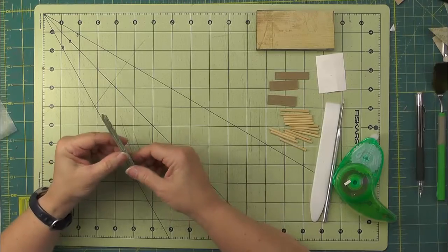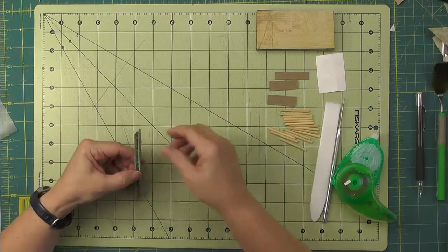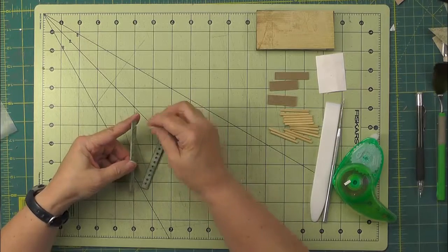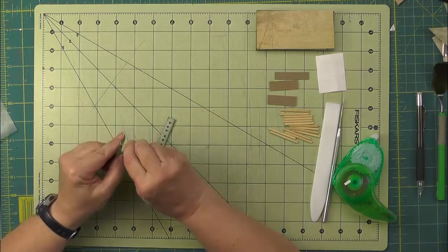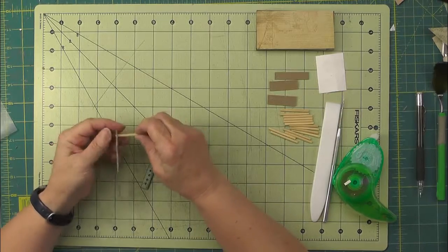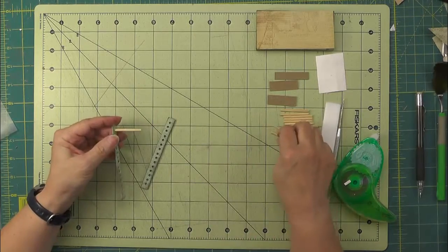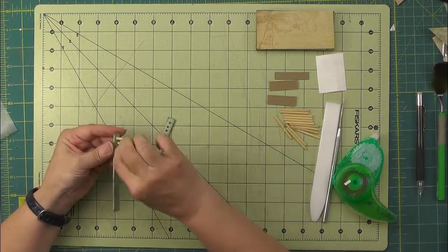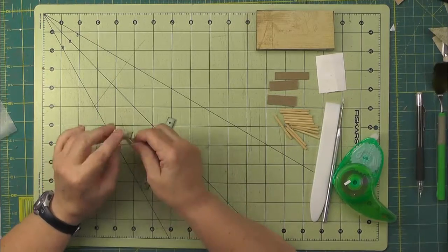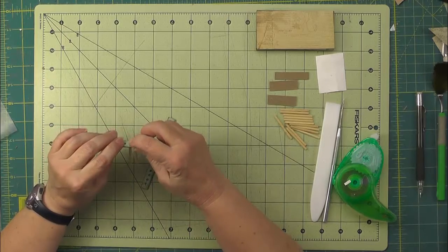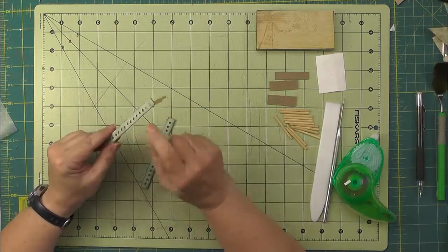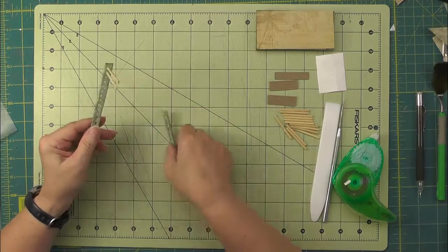And then what we want to do next is we have all of our little eighth inch dowels that have been cut to an inch and a half. And we're going to glue them in to make the ladder. So just glue them in. And when you glue them in, have them just come out flush with the outside there. And when we're finished, we're going to put a strip of paper over that so you won't see it.